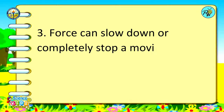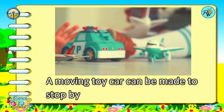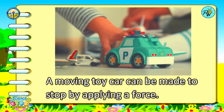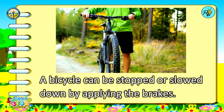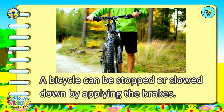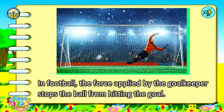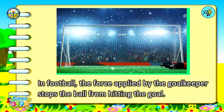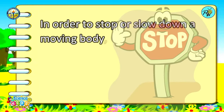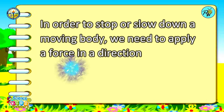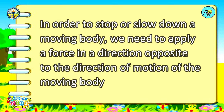Force can slow down or completely stop a moving object. A moving toy car can be made to stop by applying a force. A bicycle can be stopped or slowed down by applying the brakes. In football, the force applied by the goalkeeper stops the ball from hitting the goal. In order to stop or slow down a moving body, we need to apply a force in a direction opposite to the direction of motion.